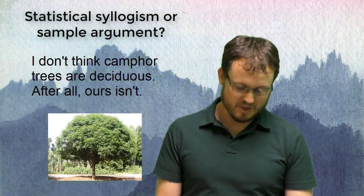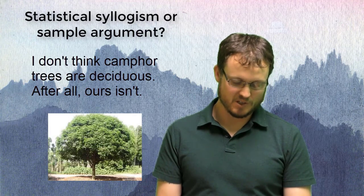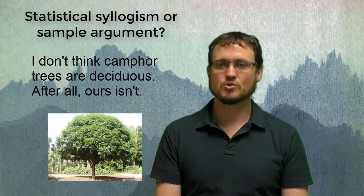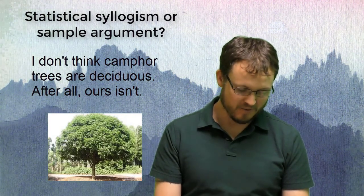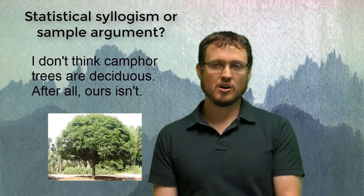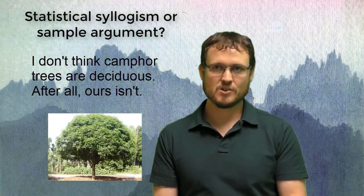So this would be a sample argument. I don't think camphor trees are deciduous. After all, ours isn't. So I'm intuiting that the premise is ours, they're using their own tree as evidence for the broader claim that they don't believe camphor trees are deciduous. So the phrase 'after all' is a premise indicator. Remember those from the first chapter, premise and conclusion indicators?